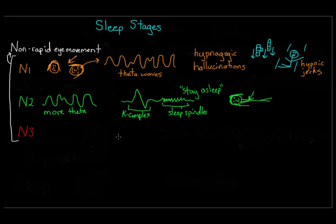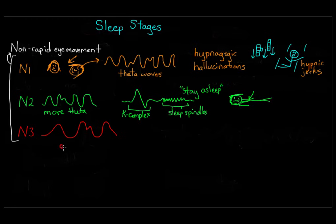Beyond N2, we have N3, our last non-REM stage. N3 is also called slow wave sleep because brain waves are very slow — these are called delta waves, and they have a range of about 0.5 to 2 Hertz, so basically half to two oscillations per second.